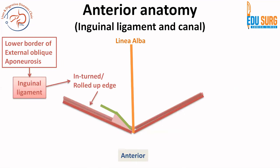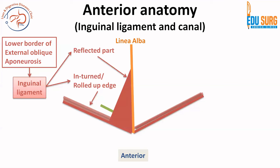Looking at these structures: the Cooper's ligament is the posterior-most, the lacunar ligament is more on the medial side towards the linea alba. The inguinal ligament has two other important parts — one is the rolled-up or interned edge which is inferior and forms the floor of the inguinal canal along with the lacunar ligament, and the other is the reflected part of the inguinal ligament, which reflects towards the linea alba and attaches to the opposite side.